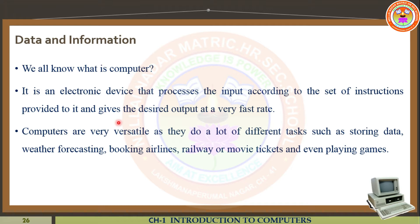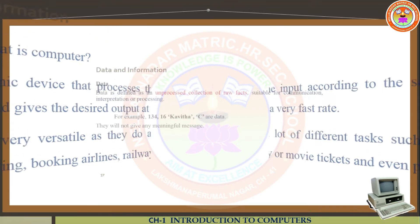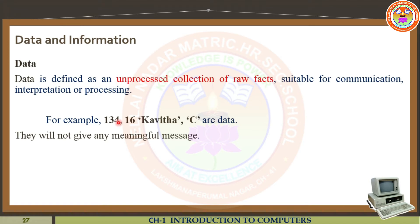It will do a lot of different tasks such as weather forecasting, booking railway and movie tickets, e-commerce activities, banking transactions, storing data, and even playing games. Nowadays, with the help of this machine, we do a lot of different tasks. Now we are going to see about what is data and what is information.